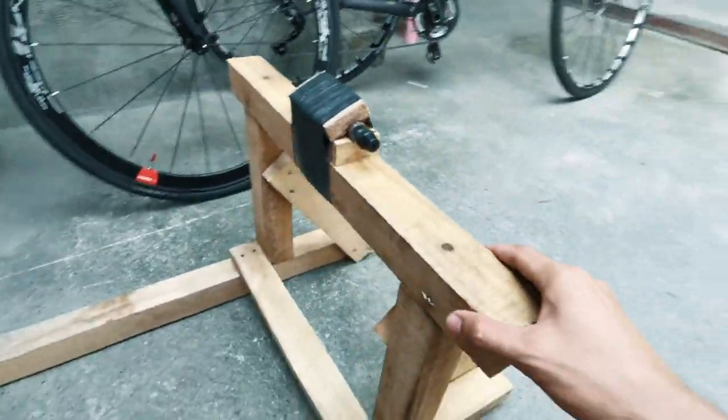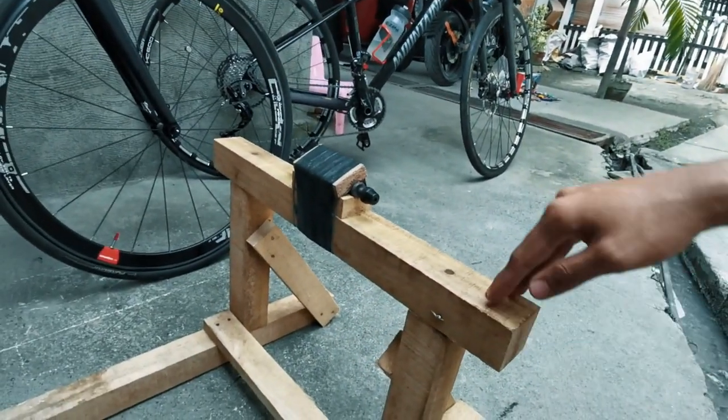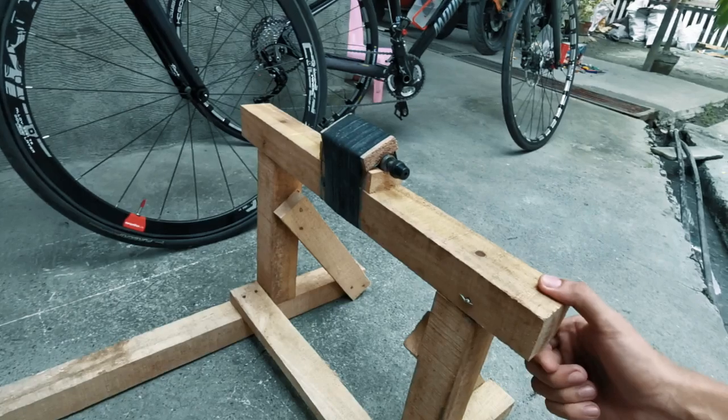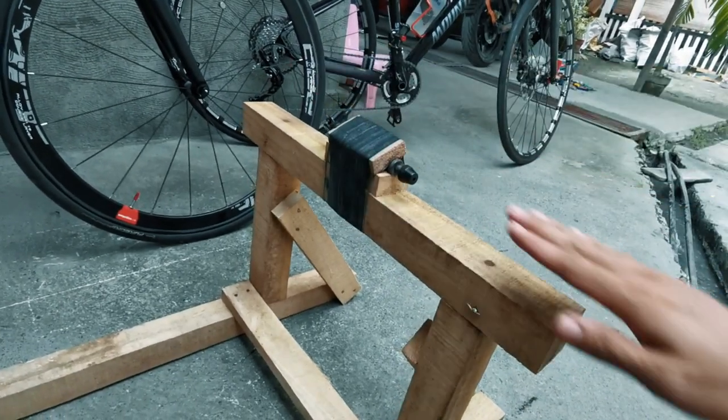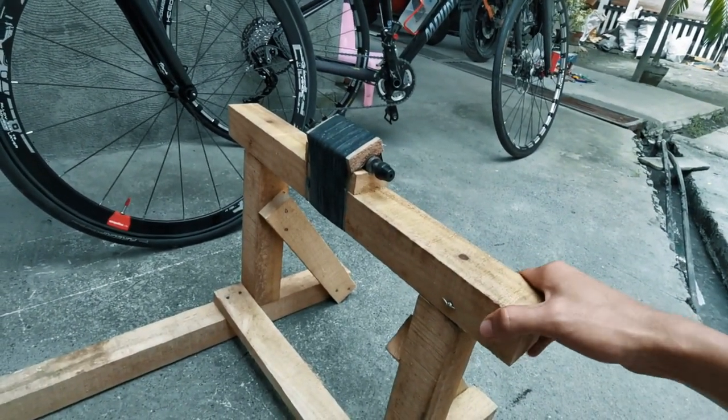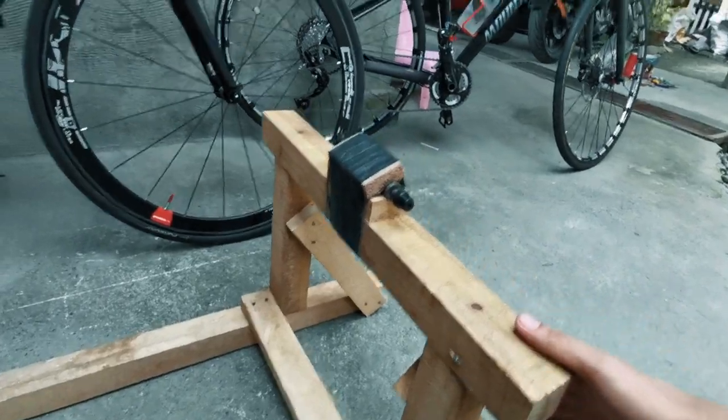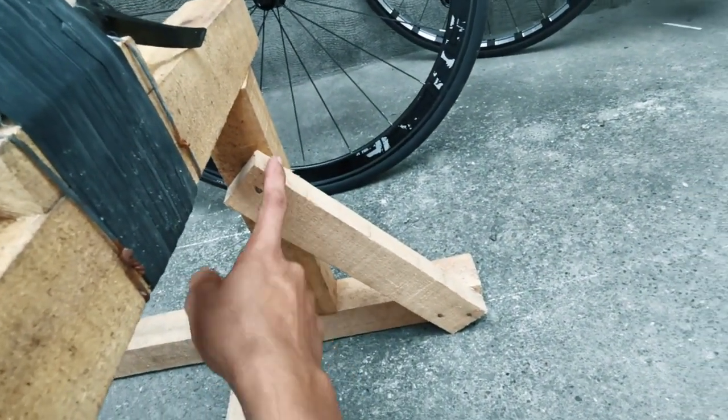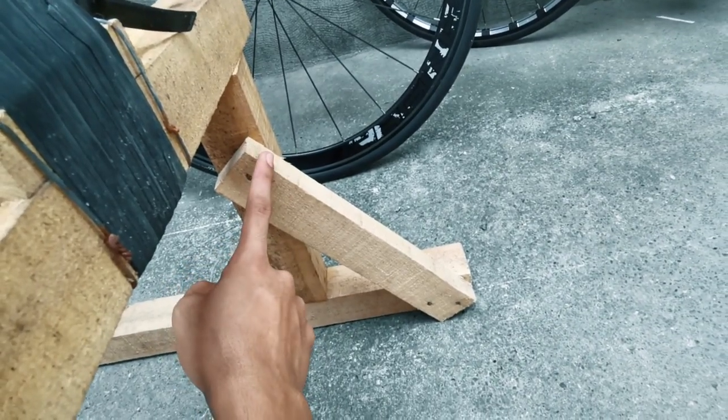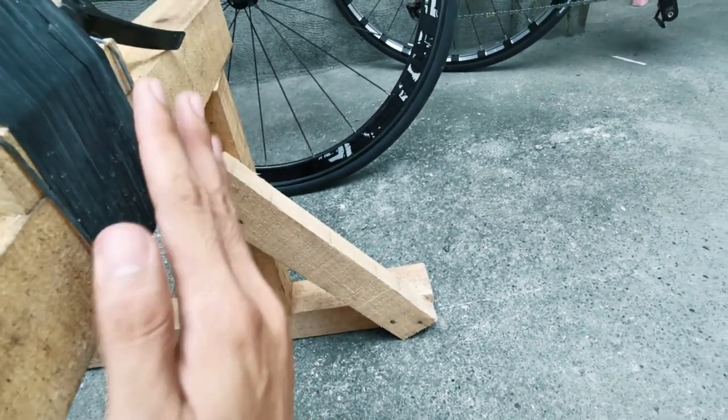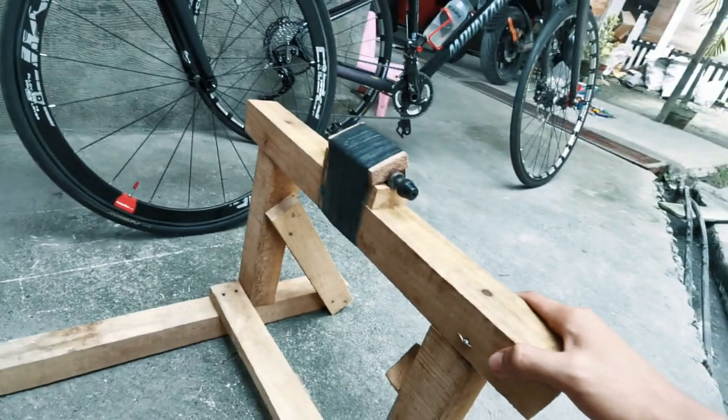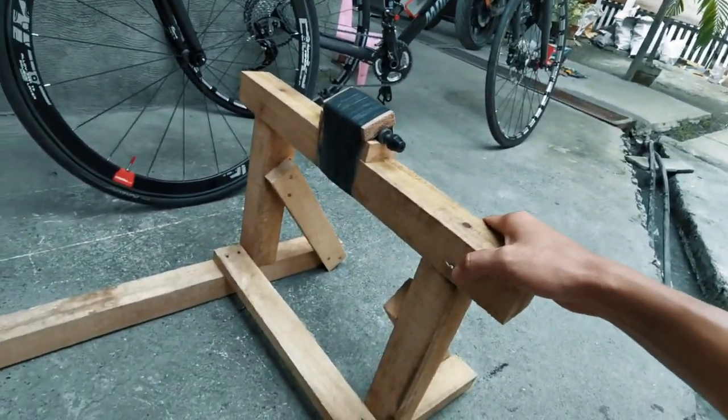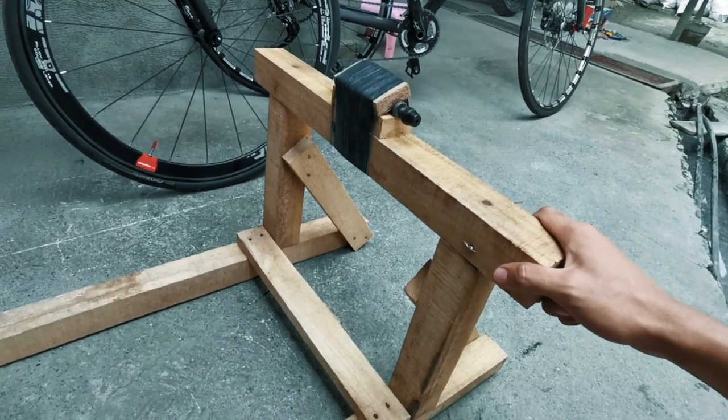And then next, cut the part at the top. Which is this one. This one is 20 inches tall I think. So after that, cut the 1x2 wood for the brace. So the purpose of this one is so that when you bike, it won't fall forward. So it will be solid and stable while pedaling.